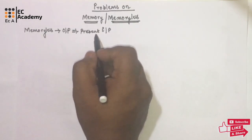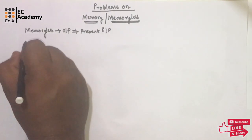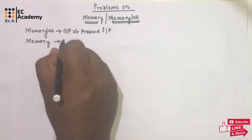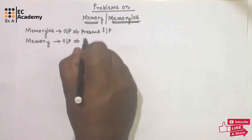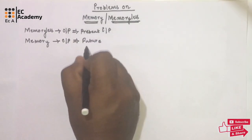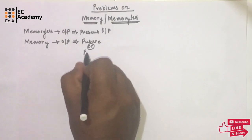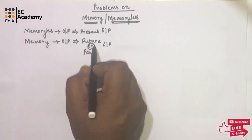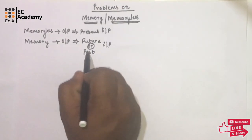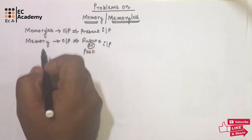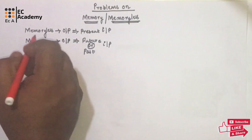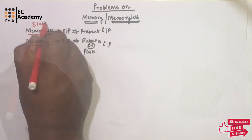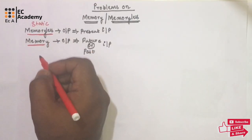A system is said to have memory if the output depends upon the future value of the input or the past value of the input. If the system output depends on future or past values, the system has memory. A memoryless system is also known as a static system, and a memory system is also known as a dynamic system.